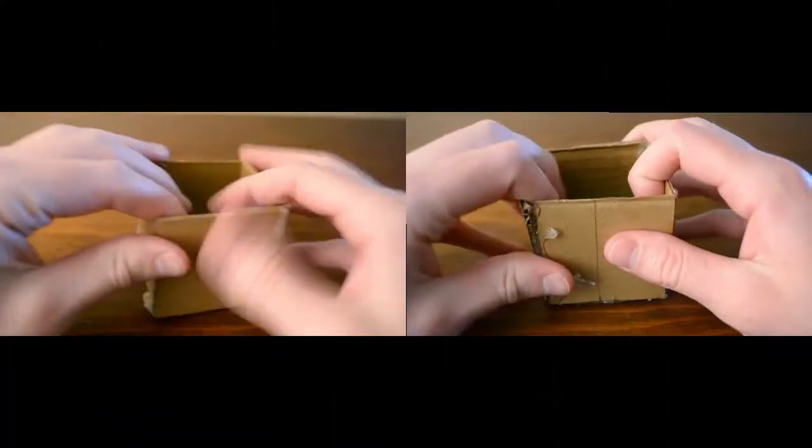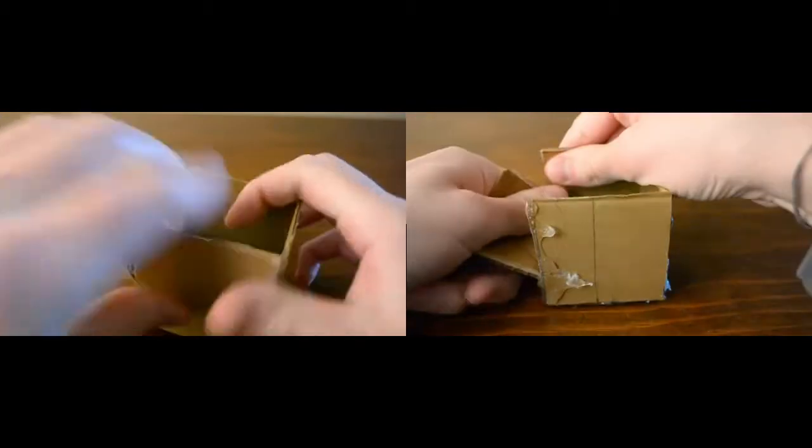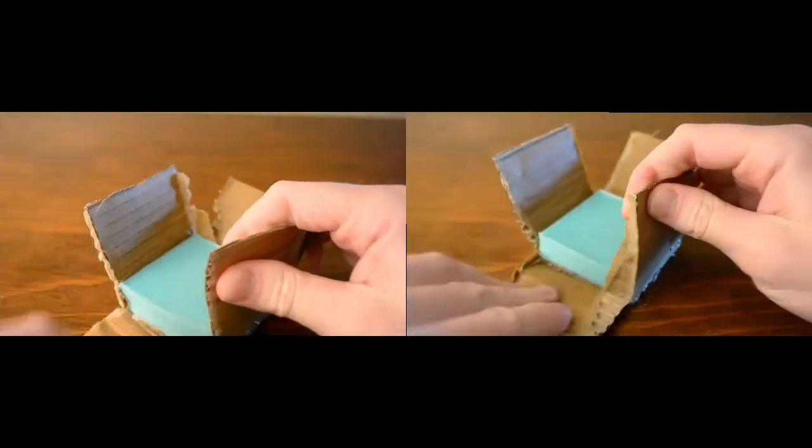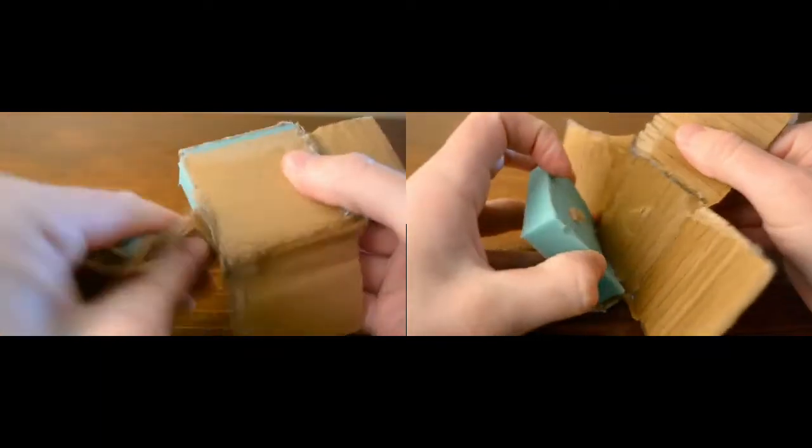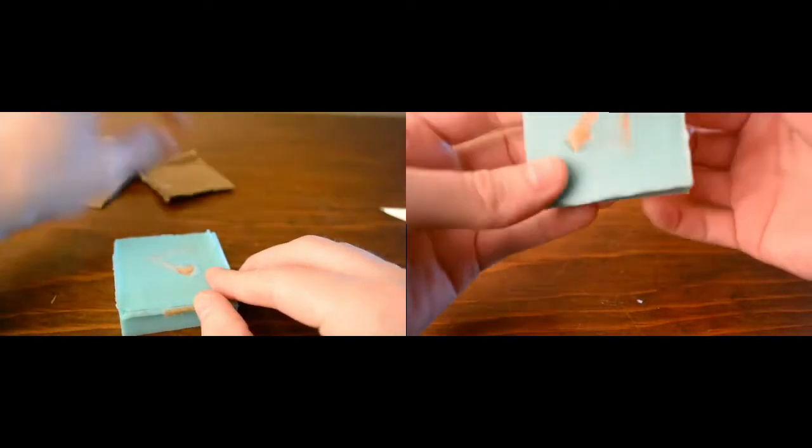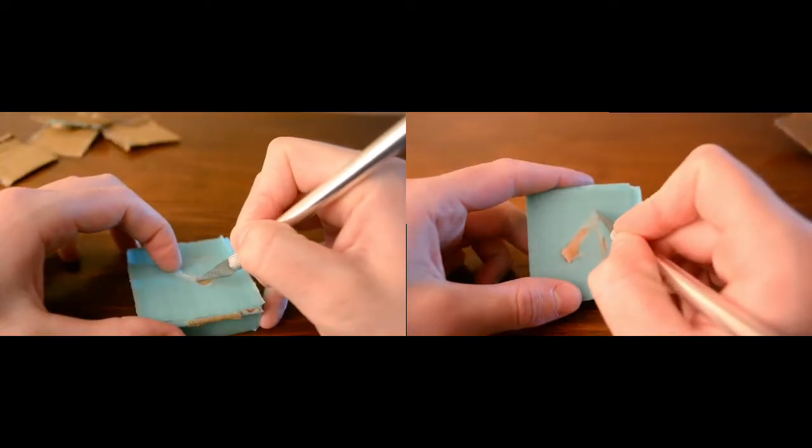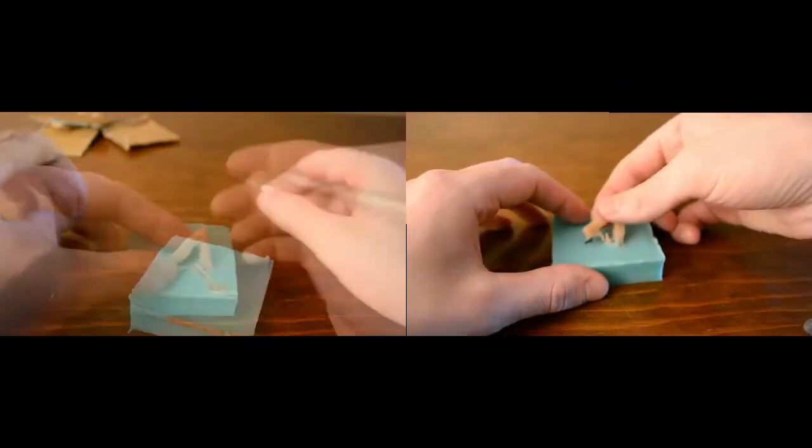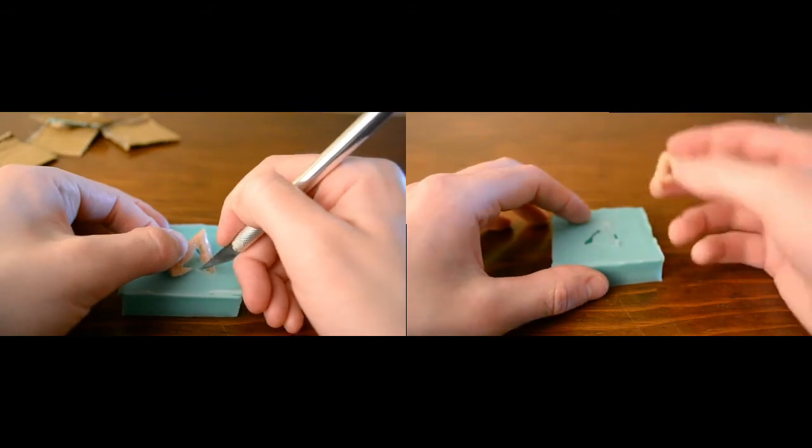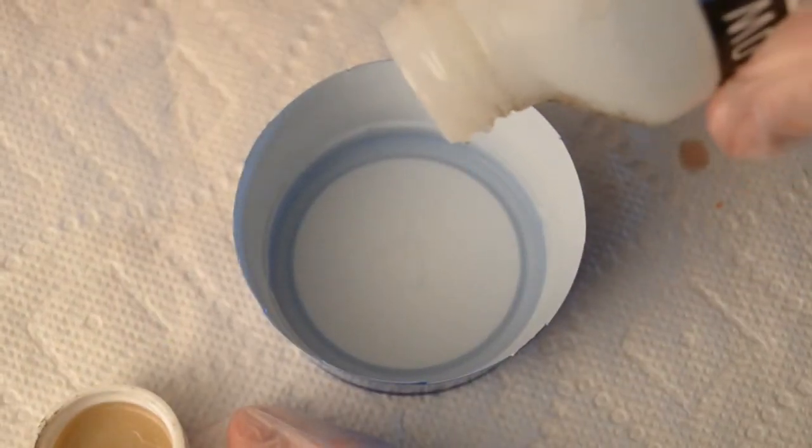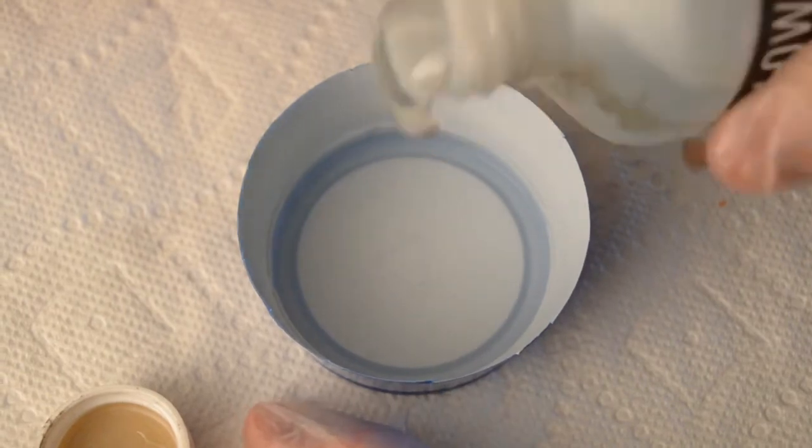Once they had set, I could demold both charms. Then it was time to resin pour both charms. So I first did the diamond inspired charm.